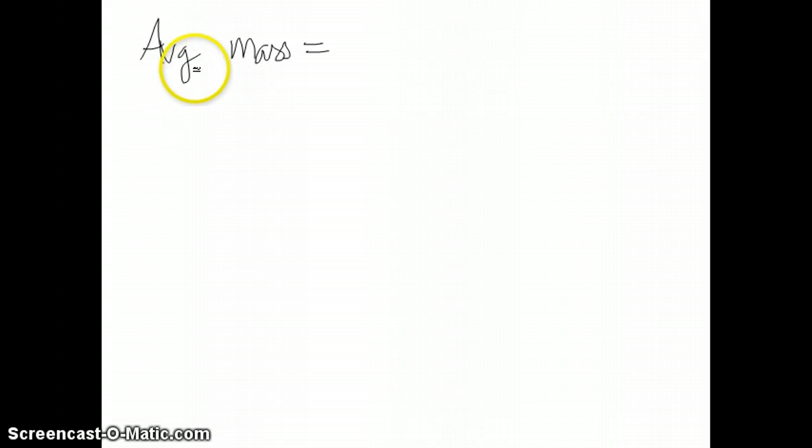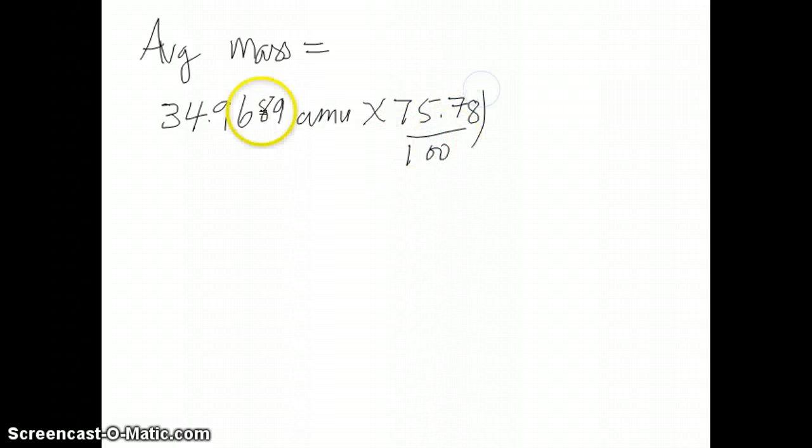In the problem that we have, we have two isotopes. One is chlorine-35, which actually has a mass of 34.9689 amu. And we're going to multiply that by its percent abundance, which is 75.78%. Now remember that 75.78% really means 75.78 over 100. So that's the first part of the problem.